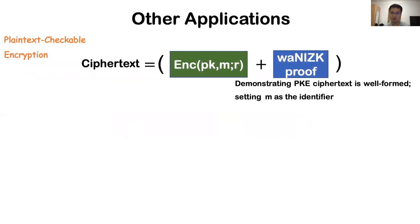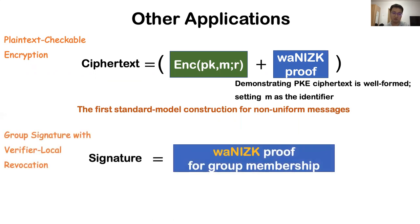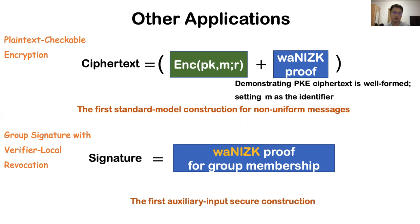We can also use witness authentication NIZK to prove well-formedness of public-key encryption ciphertexts and set the message as the identifier, obtaining a plaintext-checkable encryption — the first standard-model construction for non-uniform messages. We can also use witness authentication proof to prove group membership and give a simple construction of group signatures with verifier-local revocation. Our construction is the first with certified auxiliary input security — that is, the security properties are preserved even when adversaries have arbitrary hard-to-invert auxiliary information about the secret keys, providing a strong guarantee when keys leak.